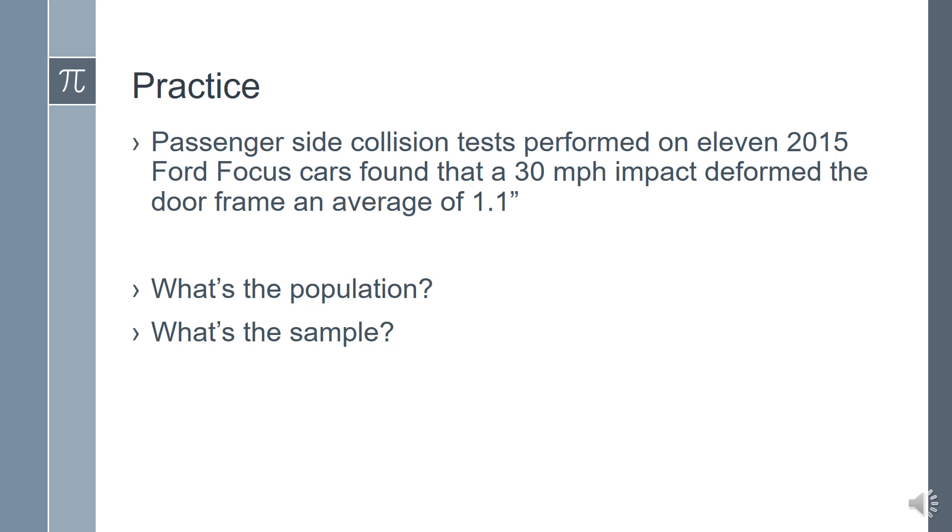Here's another example with cars. Passenger side collision tests were performed on 11 2015 Ford Focus cars. Results found the 30 mile per hour impact to deform the door frame an average of 1.1 inches. What's the population and what's the sample? The population in this scenario is all of the Ford Focus cars. And what's the sample? The 11 cars that were tested. Sometimes we look for the numerical values given to us in the word problem. But in this case, the 30 miles per hour is not representing the sample. So just be careful when you find the answer to the sample size.